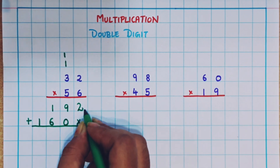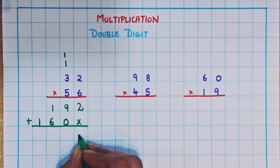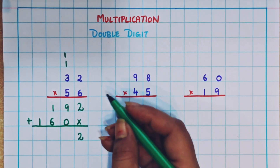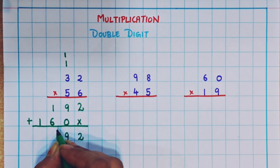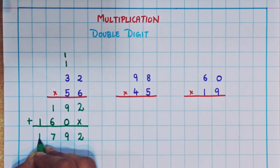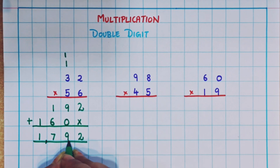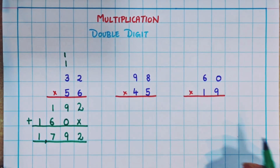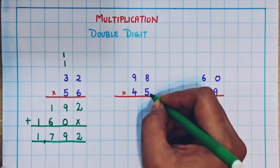Now I'll do the addition of both numbers. 2 plus nothing is 2, then 9 plus 0 is 9, then 1 plus 6 is 7, and 1. So the answer is 1792. Now let's understand with some more examples. 98 into 45.